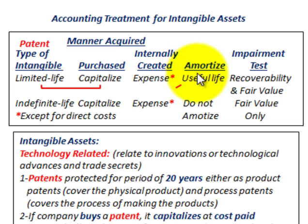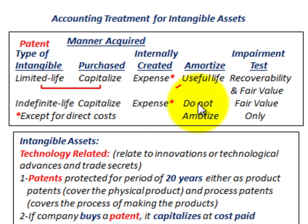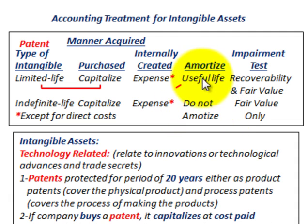In the case where we have a limited life on this patent, we'd have to consider amortization — amortizing the patent over its useful life. If we had an indefinite life on this patent, you would not amortize it. But in our case, we're going to have a useful life on the patent, so we're going to be amortizing it.